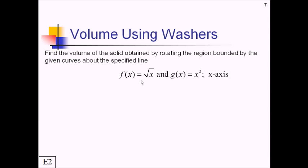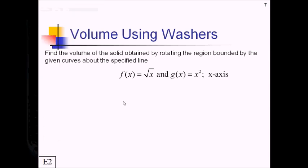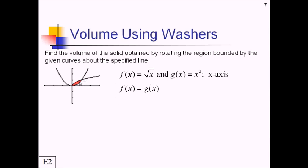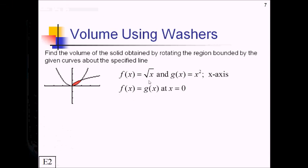Let's try out one of those washer problems. We're rotating the region bounded by radical x and x squared around the x-axis. I'm going to put the functions in my calculator in y equals and do zoom 6 to get the basic shape. There's my square root, there's my parabola. We have this little bounded region between zero and one. To figure out where these actually intersect, I'll set them equal and use second trace, option 5 for intersect — and we do indeed have an intersection at x equals one. We also intersect at zero, at the origin.